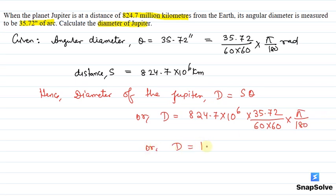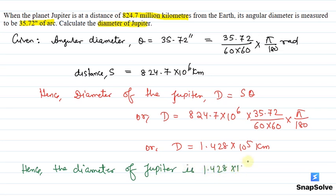Our D value comes out to be 1.428 times 10 to the power 5 kilometers. So this is the final answer for the diameter of Jupiter. Hence, the diameter of Jupiter is 1.428 times 10 to the power 5 kilometers. I hope you understood the explanation, thank you.